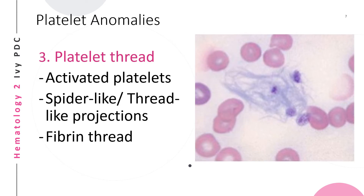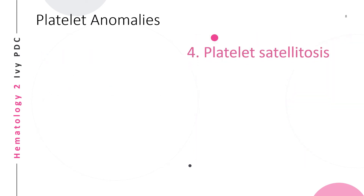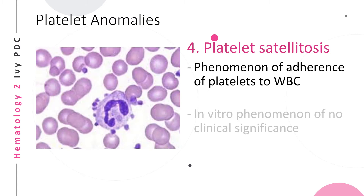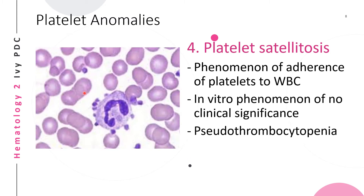The fourth platelet anomaly is platelet satellitism. This is a phenomenon where platelets adhere to a white blood cell, forming a ring or satelliting around it in vitro. This has no clinical significance, but it can cause pseudothrombocytopenia, as these platelets adhered to white blood cells may no longer be counted in the platelet count.